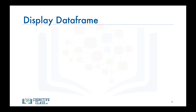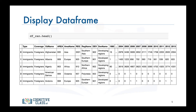If you want to confirm that you have imported your data correctly in pandas, you can always use the head function to display the first five rows of the data frame. So if we call this function on our data frame df_can, here is the output.